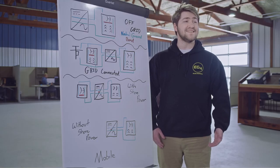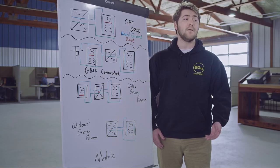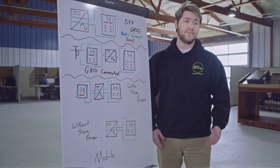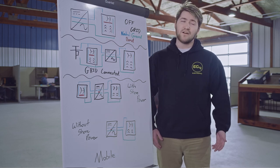For grid connected systems, you'll rely on the existing neutral bond in your home and will not bond the output panel on your inverter. A main breaker style output panel is not required in this case, but we do recommend it.